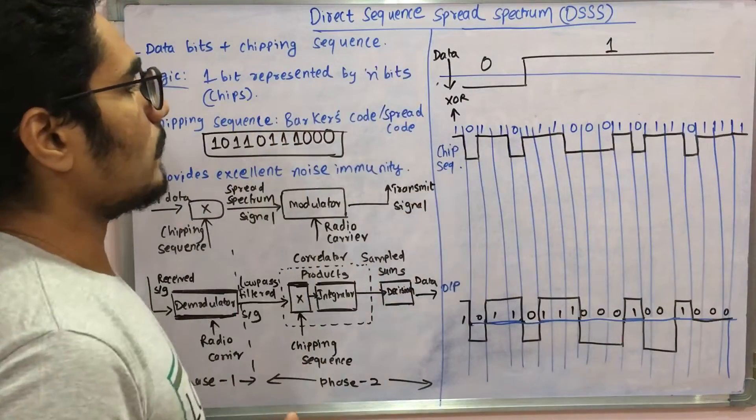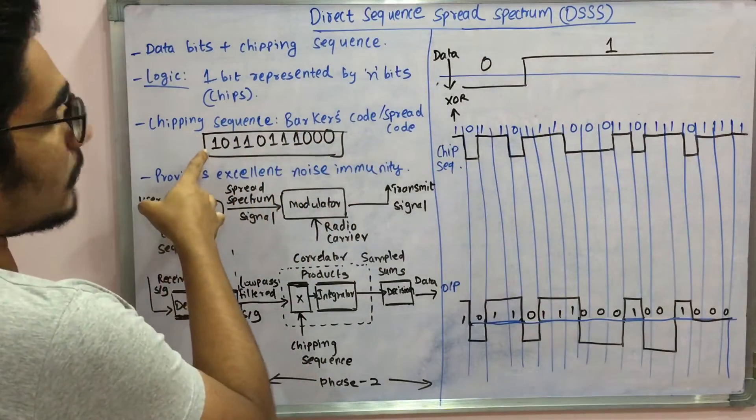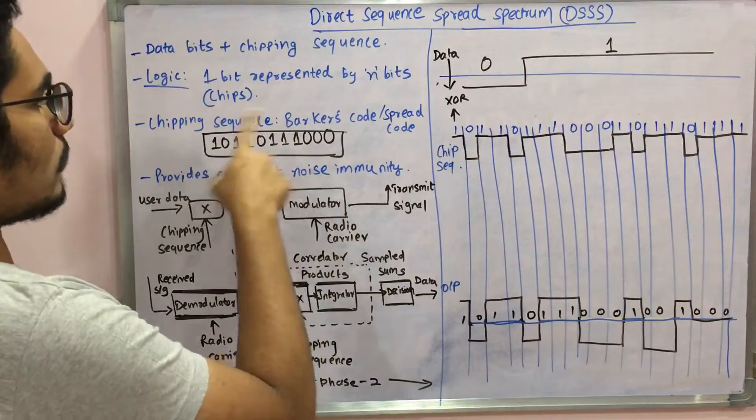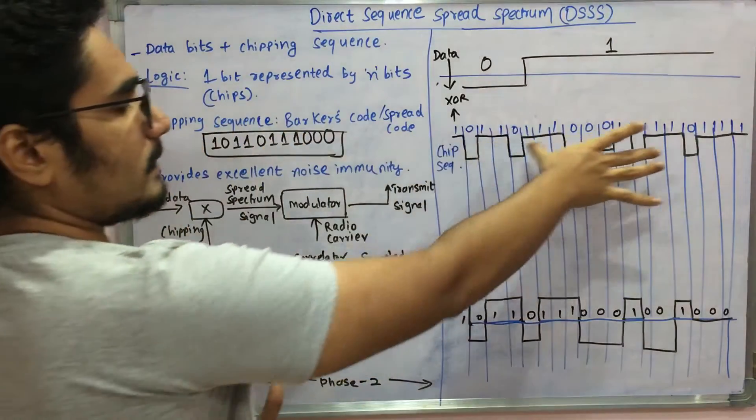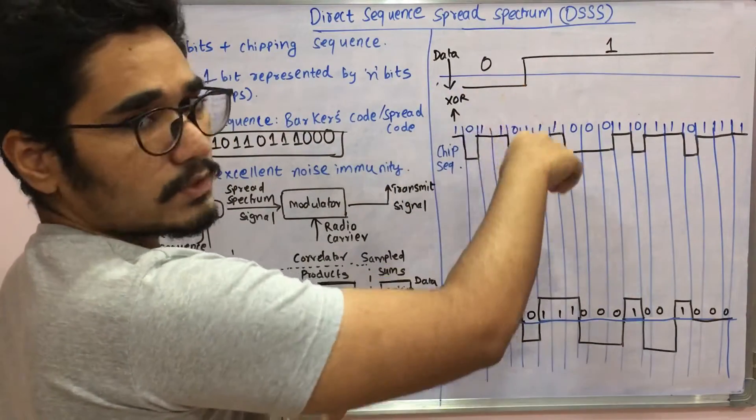That code is something like this: it represents one, zero, double one, zero, triple one, triple zero. This code or chipping sequence is applied and we have some crest or trough, then you just mix it with the signal.